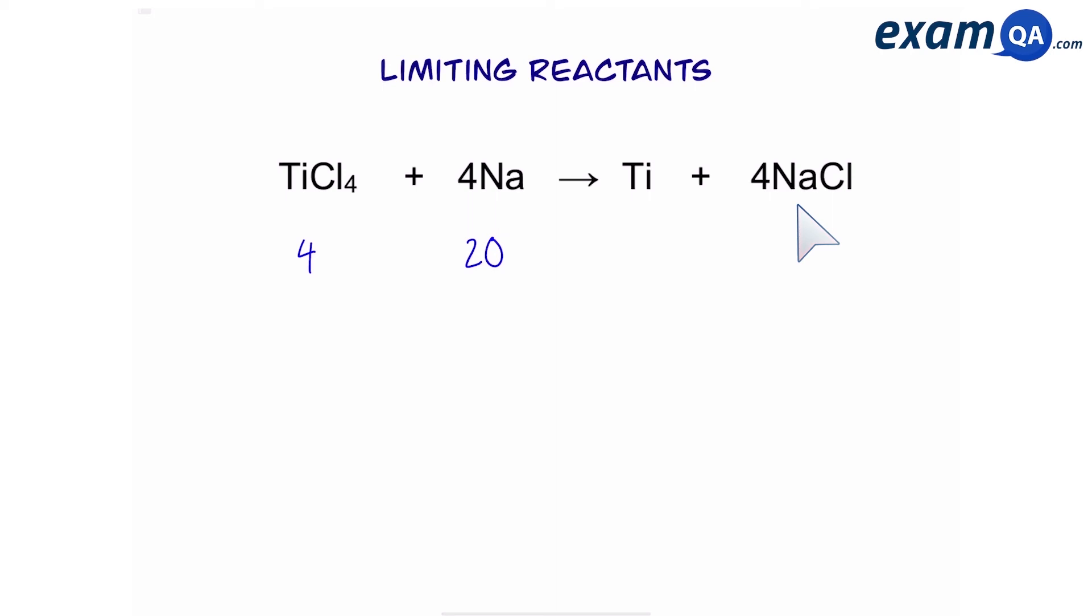Okay guys, we're on the last example. Hang in there, we're nearly finished. So titanium chloride, there's a 1 in front of it. Sodium divided by 4, which gives you 5. The lower number is going to be 4. That's our limiting reactant. Now times it by 1 for titanium, and times it by 4 for sodium chloride. So we get 4 titaniums and 16 sodium chlorides.